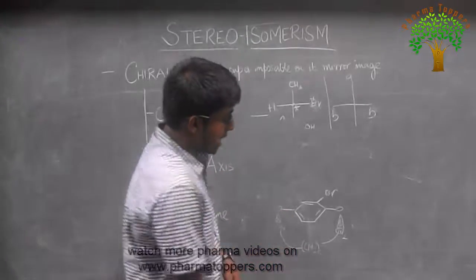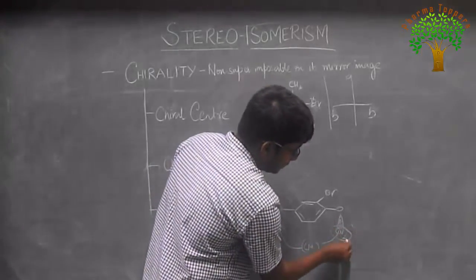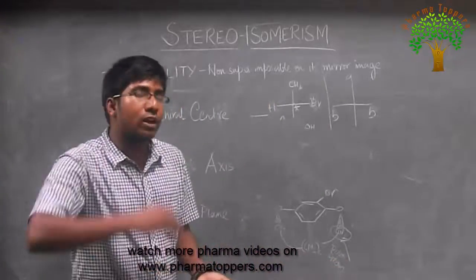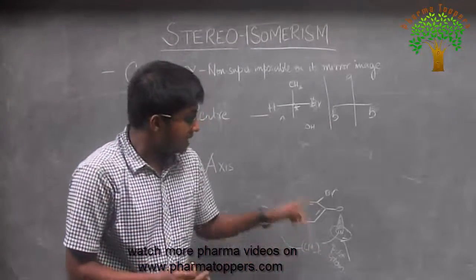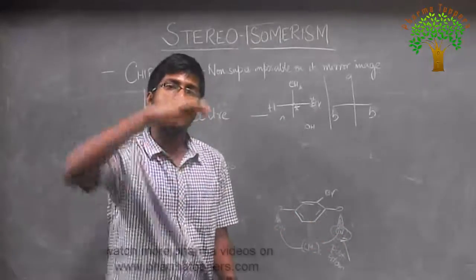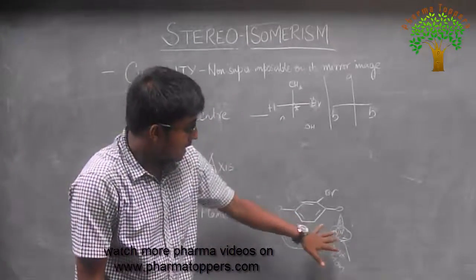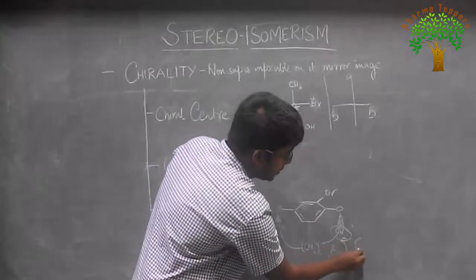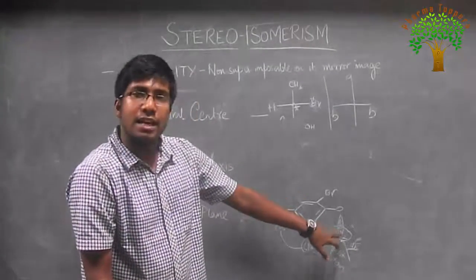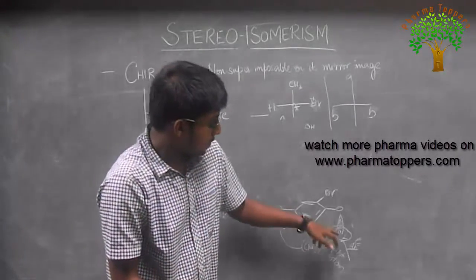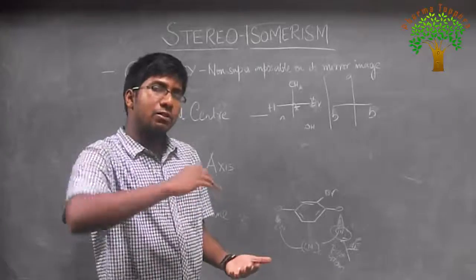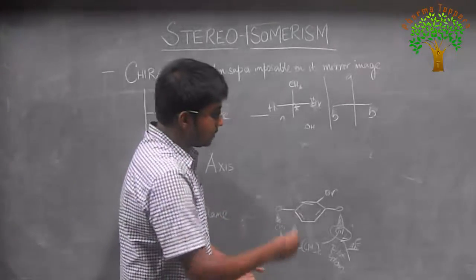To assign RS configuration to a chiral plane compound, we first choose the pilot atom. The pilot atom is that atom which is not in the plane. In this example, benzene is the plane, and the CH2 group is above the plane, shown by the bold arrow. The pilot atom is the atom from where we view the molecule — the viewer's eye is placed at this CH2 group above the plane. We then follow the sequence rule, but the application is slightly different here: we follow or trace a path through the molecule.